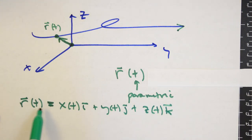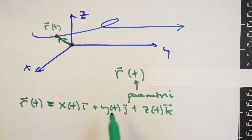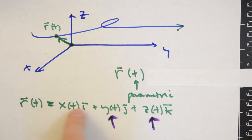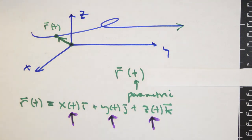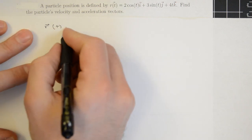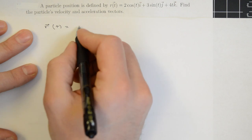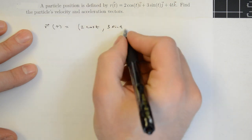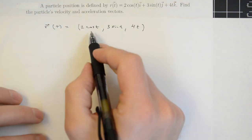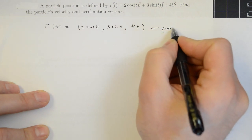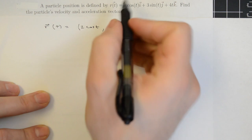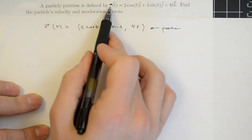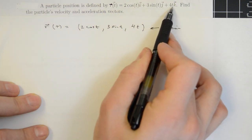When differentiating and integrating functions in this vector value form, we differentiate and integrate component-wise, keeping track of constants of integration in each dimensional component — that's really the key idea. In this first problem, we're given a position function R(t) equal to 2 cosine t in the i-coordinate, 3 sine t in the j-coordinate, and 4t in the k-coordinate, representing x, y, and z directions respectively.